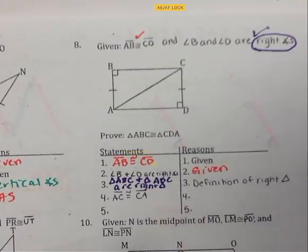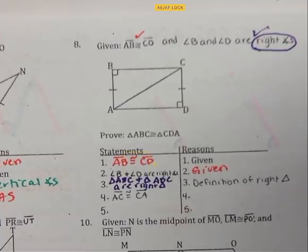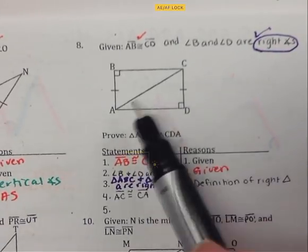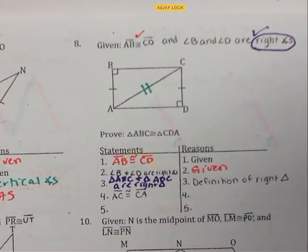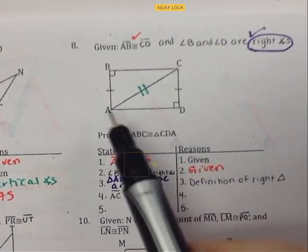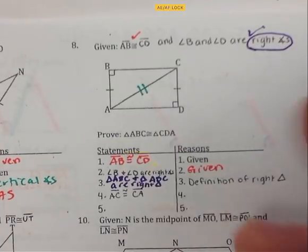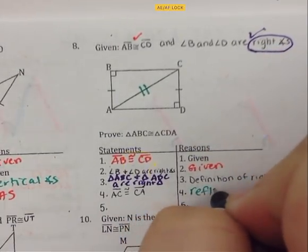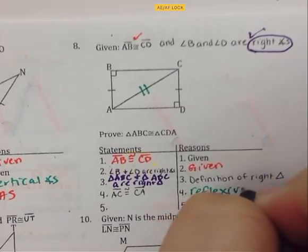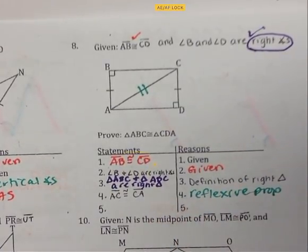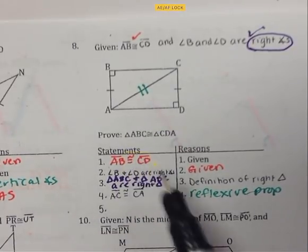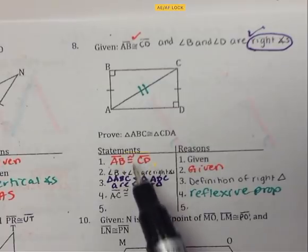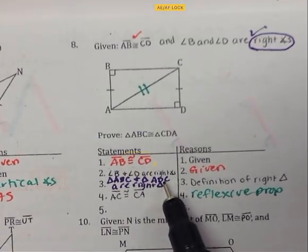Now segment AC is congruent to segment CA. Both triangles share that exact same side — that's called the reflexive property. So I can put two tick marks on it. I have two congruencies, but I also have right triangles.